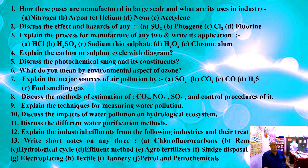Question number six — what do you mean by the environmental aspect of ozone? Question number seven — explain the major sources of air pollution: A) SO2, B) CO2, C) CO, D) H2S, and E) foul smelling gases.